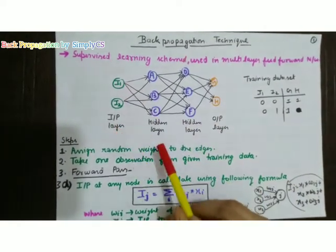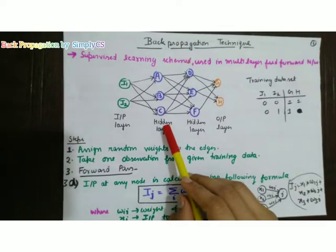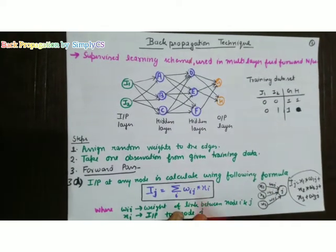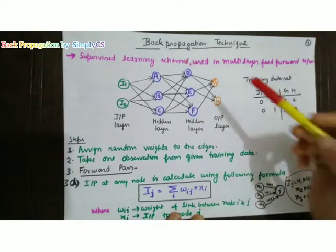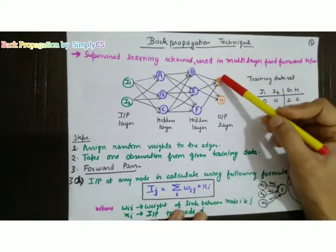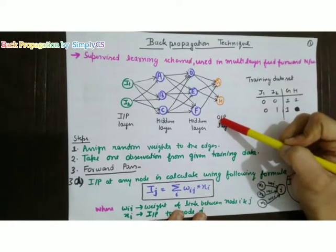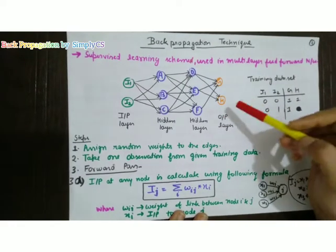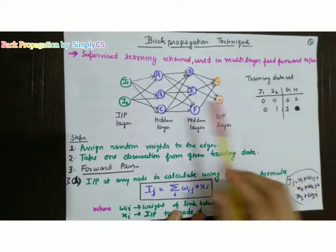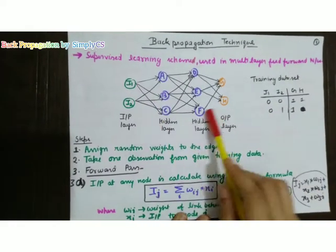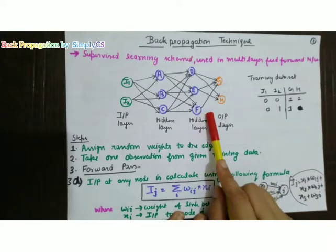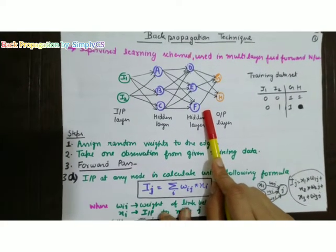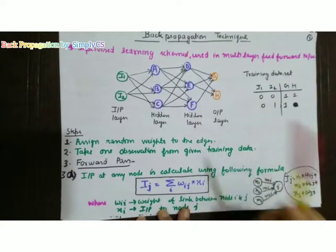I have two hidden layers, more than one hidden layer. Now I will show that for a given multi-layer feed forward network, we will apply the back propagation technique.